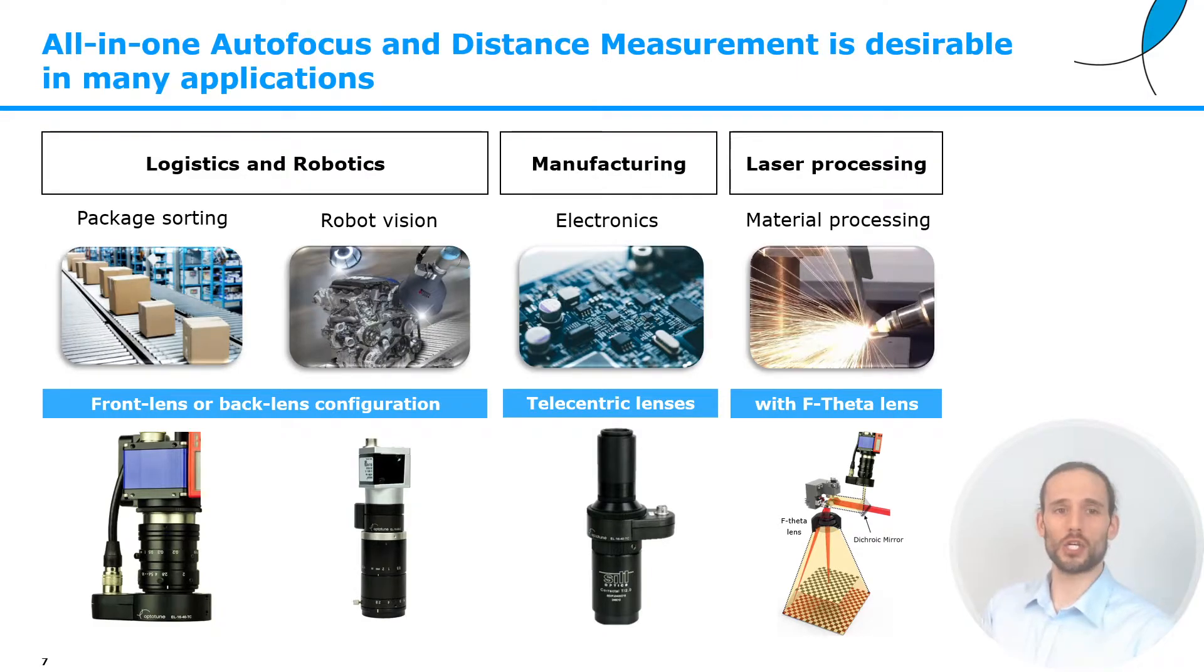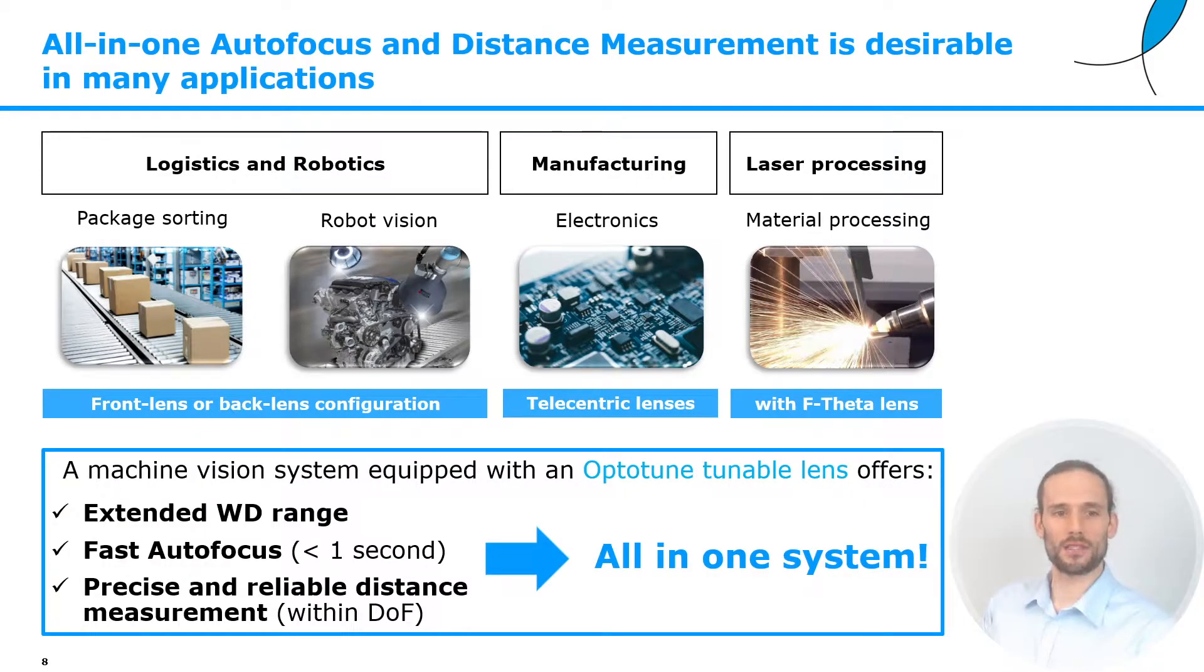The range of applications in the machine vision realm is quite wide. For example, logistics and robotics can use our lenses in combination with endocentric lenses in the so-called front lens or back lens configurations. More demanding applications can greatly benefit from our technology. For example, manufacturing or material processing can use our lens in combination with telecentric lenses or for imaging with f-theta lenses in laser processing machines.